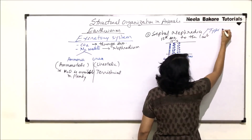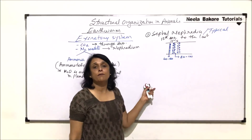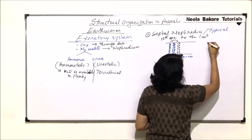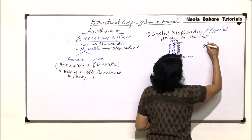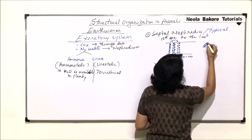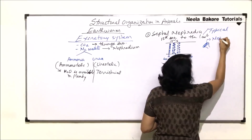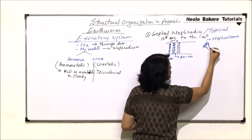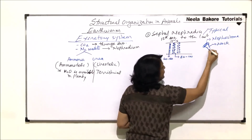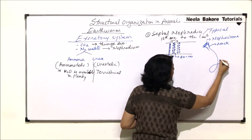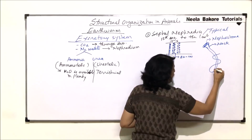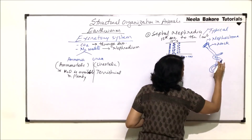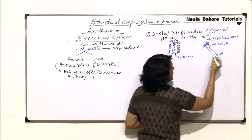So total in a segment there would be around 80 to 100 nephridia. These are called typical nephridia because they show all the basic structures. There is a funnel-like opening known as the nephrostome, which leads into a narrow tube called the neck, and then this tube gets highly coiled and ultimately opens through an aperture known as the nephridiopore.